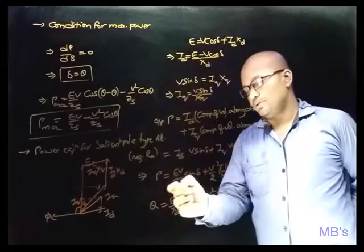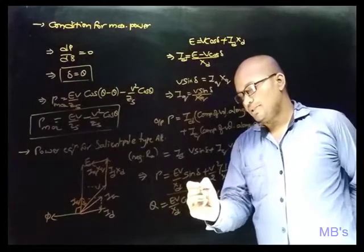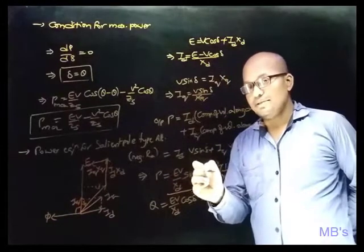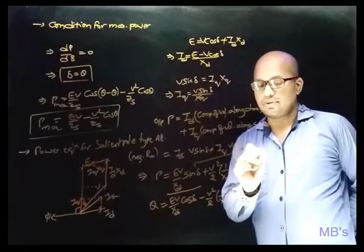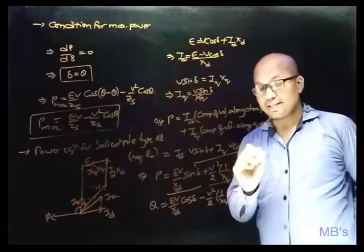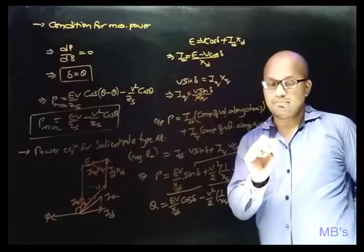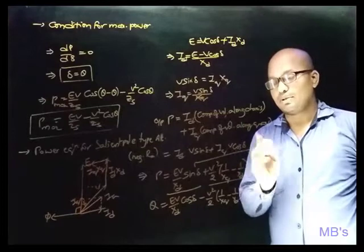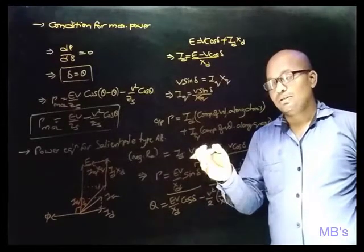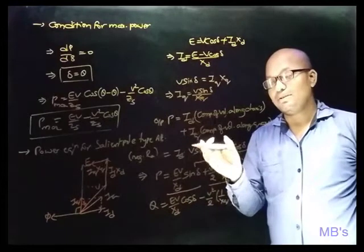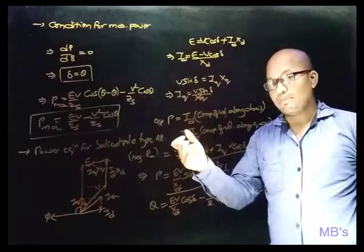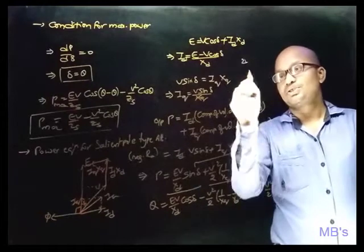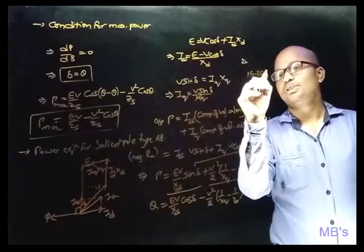In the power equation of the salient pole alternator, the first term — (EV/Xd) × sin δ — is similar to the power equation of the cylindrical rotor alternator, representing electromagnetic power PEM. The second term — (V²/2)(1/Xq − 1/Xd) × sin 2δ — is the reluctance power PRM. The power output of the salient pole type is electromagnetic power plus reluctance power.